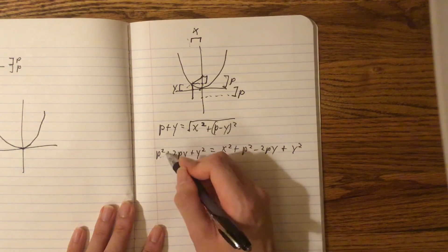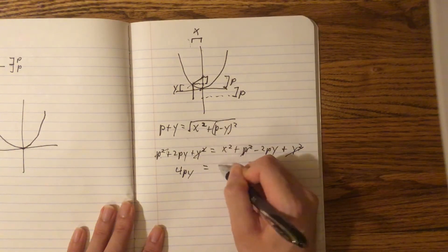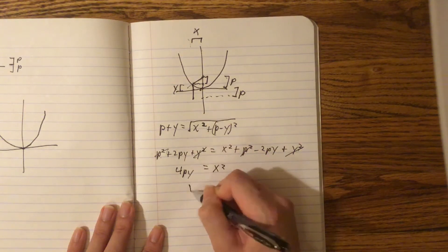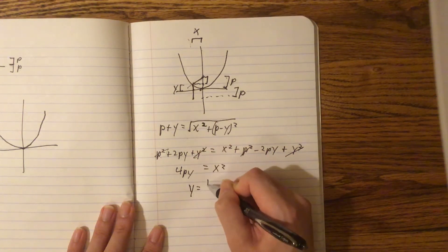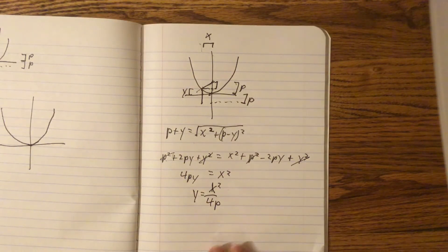So, we get 4py equal x squared. And then finally we get y equals x squared over 4p. And that's the proof.